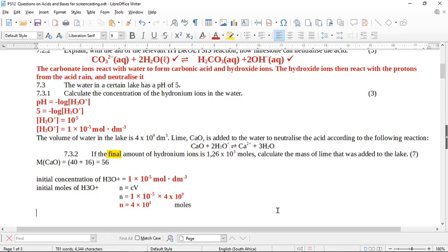So if we want to find the number of moles that reacted, we take our initial moles and we subtract the final moles. Remember they gave you the final moles in the question, the final amount of hydronium ions is this. So we're going to do this and we're going to subtract that. Initial minus final. And if you whip out your calculator, 4 times 10 to the 4 minus 1.26 times 10 to the 3. I've got something like 38,740 moles. So these are the moles of hydronium ions that reacted.